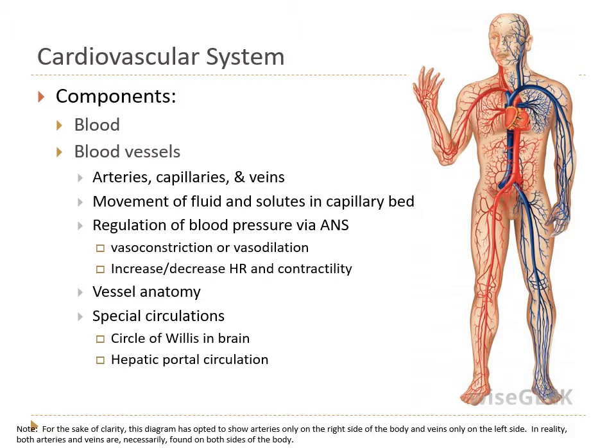We then talked about blood vessel anatomy and learned the names of many different blood vessels, and discussed two special circulations: the circle of Willis at the base of the brain, which receives blood flow from both the vertebral arteries via the basilar artery as well as the two internal carotid arteries, and the hepatic portal circulation, where all the veins draining the intestines have to drain into the hepatic portal vein, go out into capillaries in the liver to get processed, then drain through hepatic veins before entering the inferior vena cava.